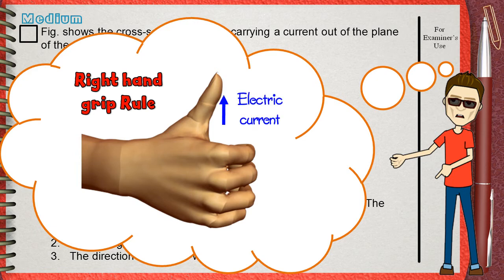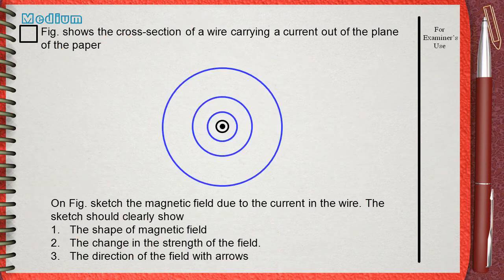if you make your right hand as shown, if the thumb points to the direction of the current, then the other four fingers will show the direction of the magnetic field. This shows the direction of the magnetic field of the wire. Let's apply this rule on our case.